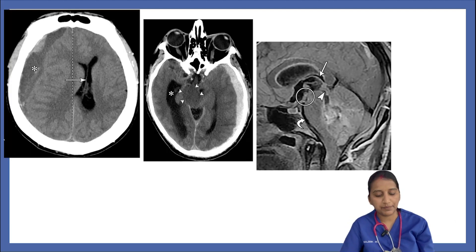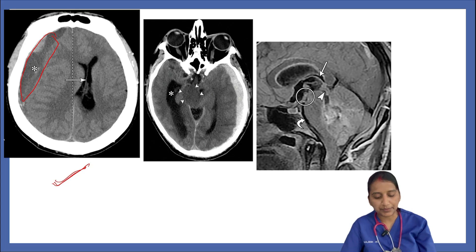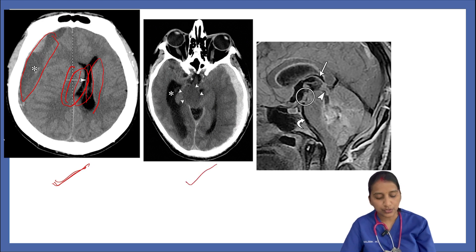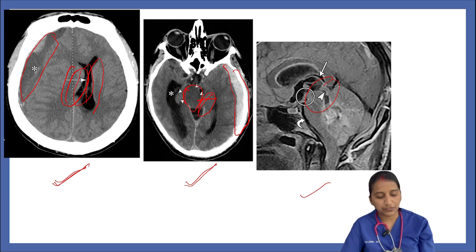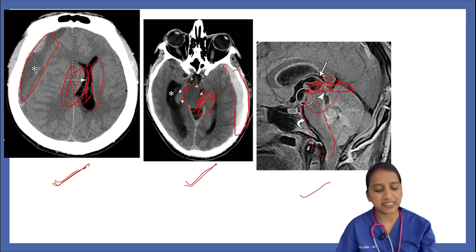Looking at herniation images: the first CT image shows subfalcine herniation with a right subdural hematoma displacing the septum pellucidum to the left, compressing the right lateral ventricle with dilation of the left lateral ventricle. The second image shows descending transtentorial herniation where a left SDH causes compression and rotation of the midbrain with complete obliteration of the perimesencephalic cistern. The third image shows ascending transtentorial herniation with obliteration of the quadrigeminal, supracerebellar, and interpeduncular cisterns, and anterior displacement of the brainstem.